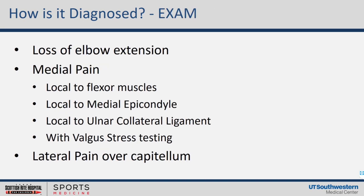On exam, we see loss of elbow extension — compare the throwing arm to the contralateral side. The whole joint is inflamed; there's synovitis and tension in the flexor musculature causing a flexion contracture. There's medial pain — at first over the flexor muscles, then at the medial epicondyle itself, then the ulnar collateral ligament. You can use valgus stress testing on those structures to find point tenderness. Kids with capitellar problems have posterolateral vague pain and sometimes mechanical signs.